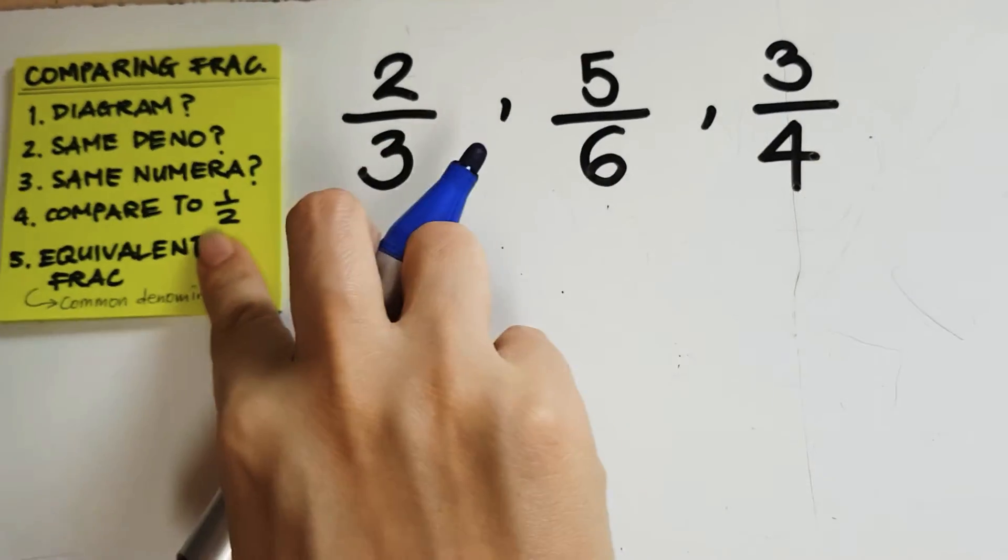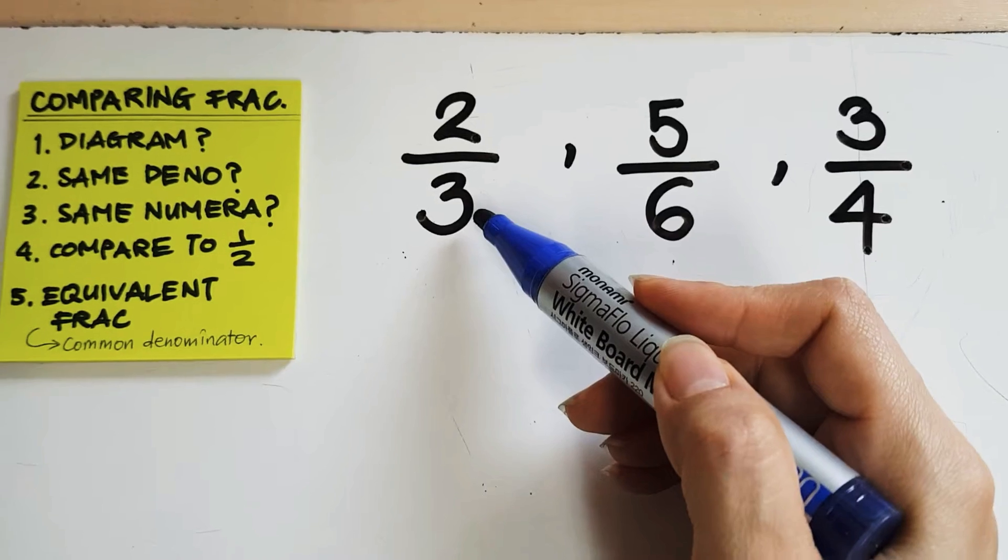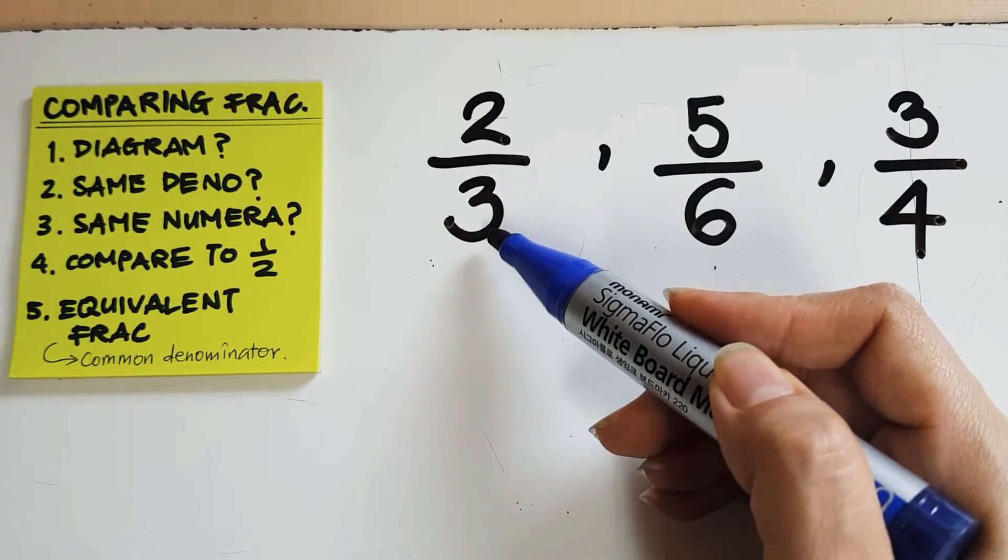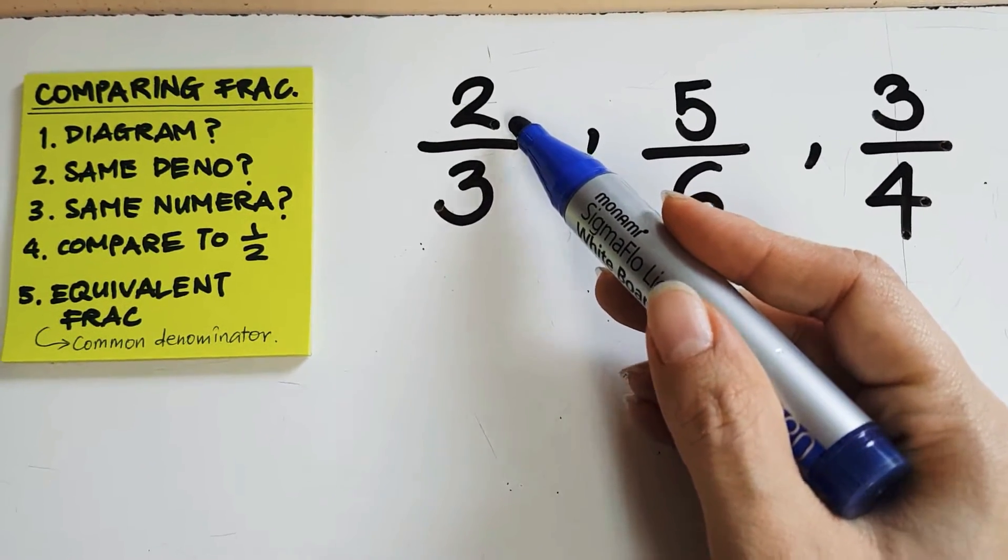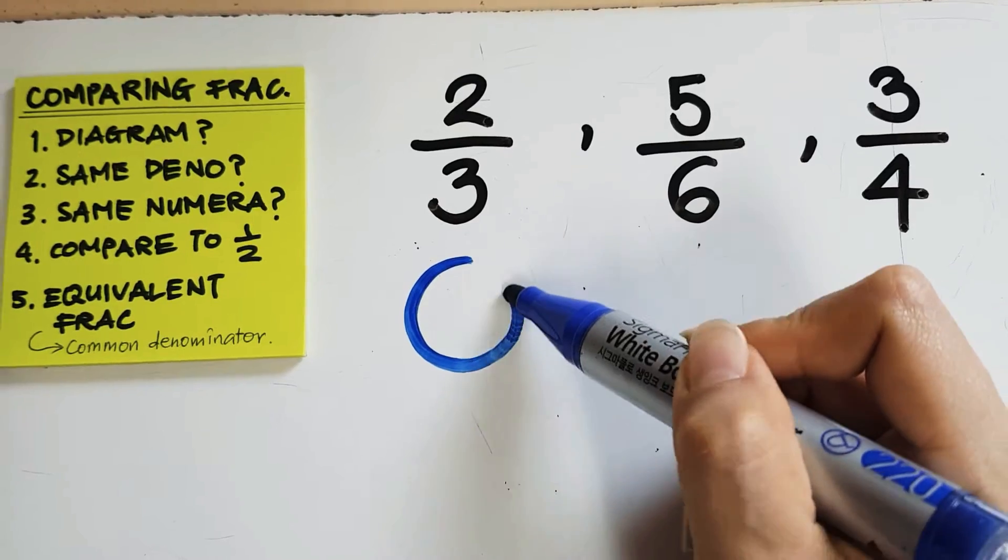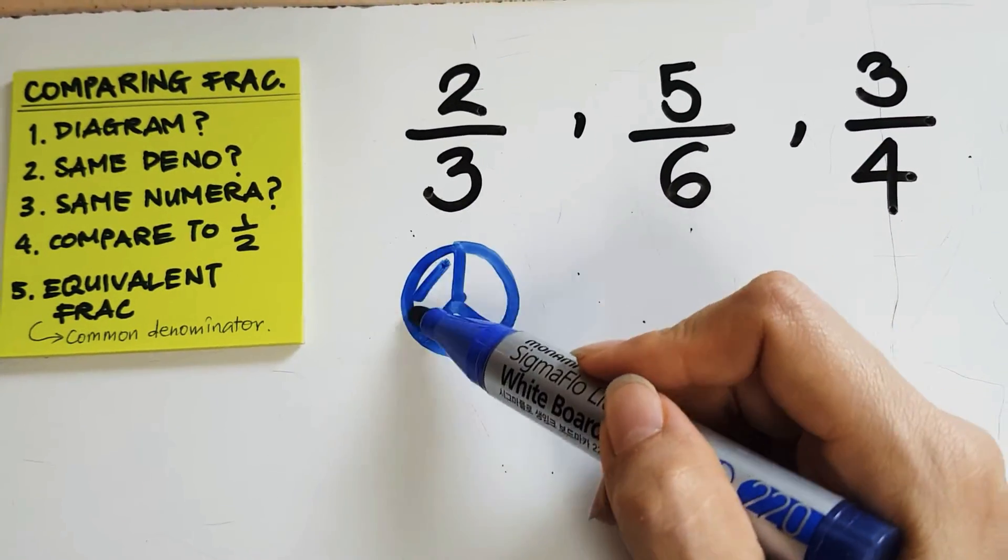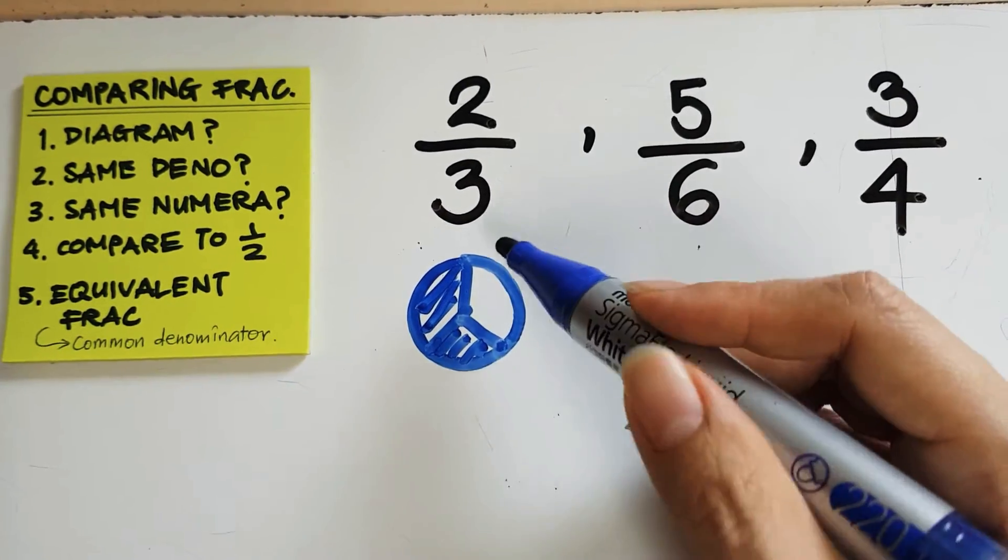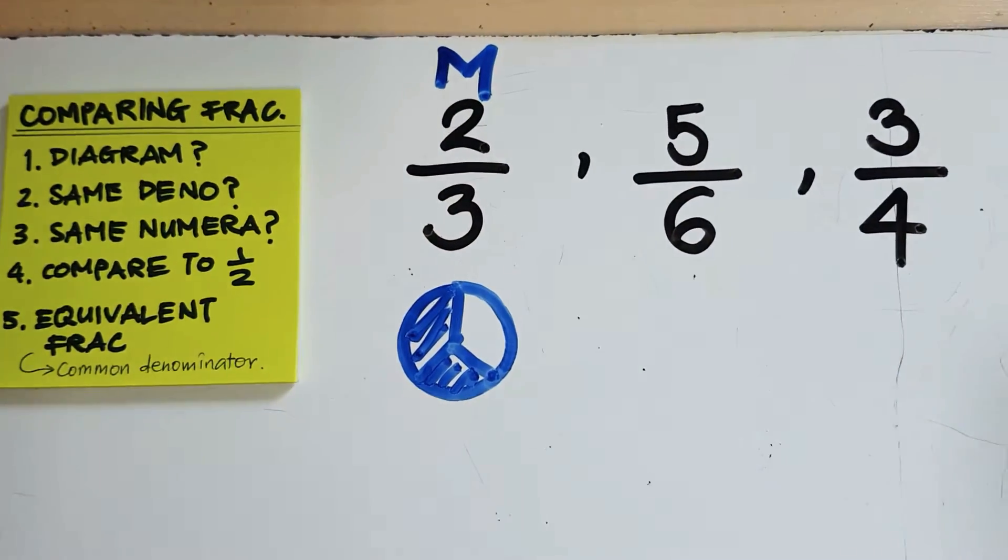Okay, so I'm going to think of this. Two-thirds, is this more or less than half? Now, if I have three pieces of cake and I eat two, I would have eaten more than half of the cake. If I draw a diagram and I split it into three parts, two-thirds would be two out of three, and so that would be more than half. I'm going to put M there to remind myself that it's more than half.